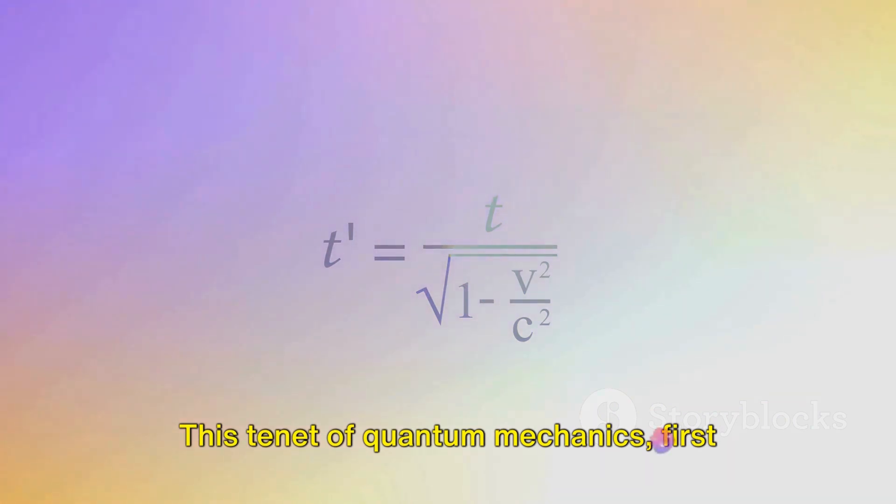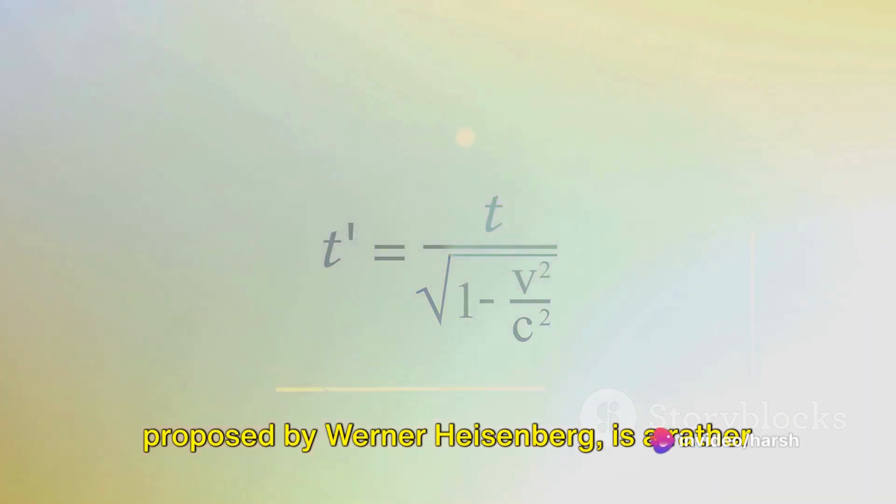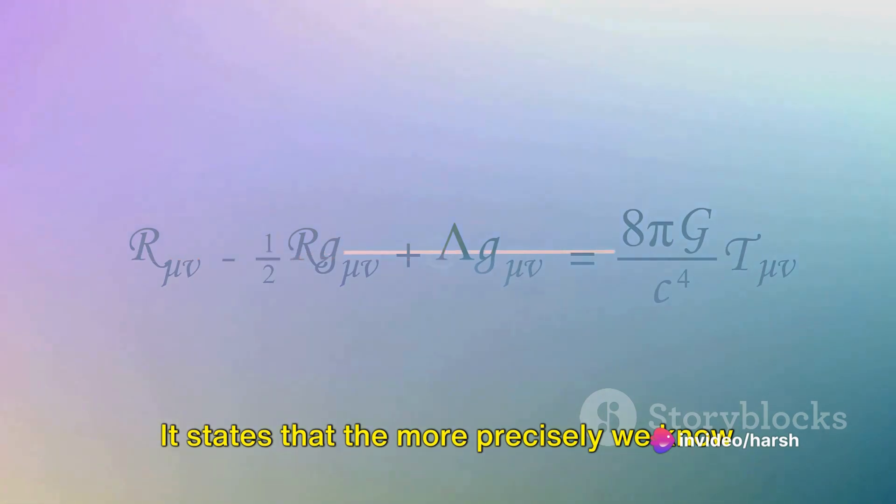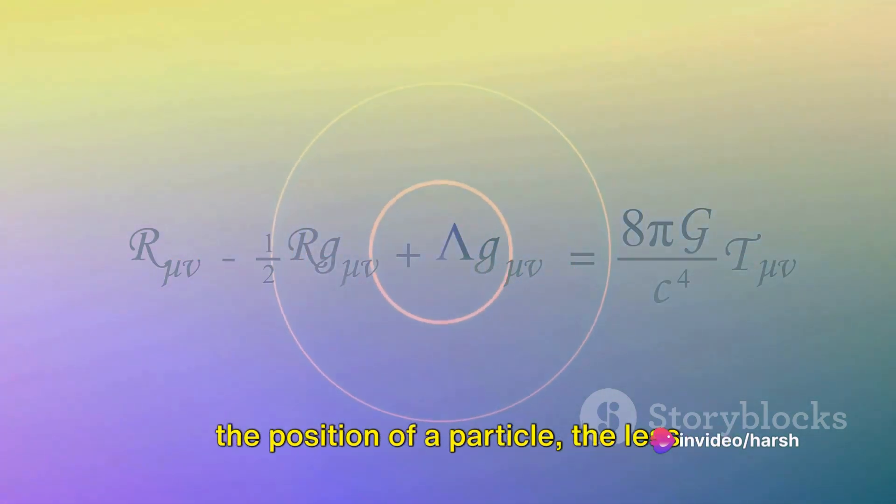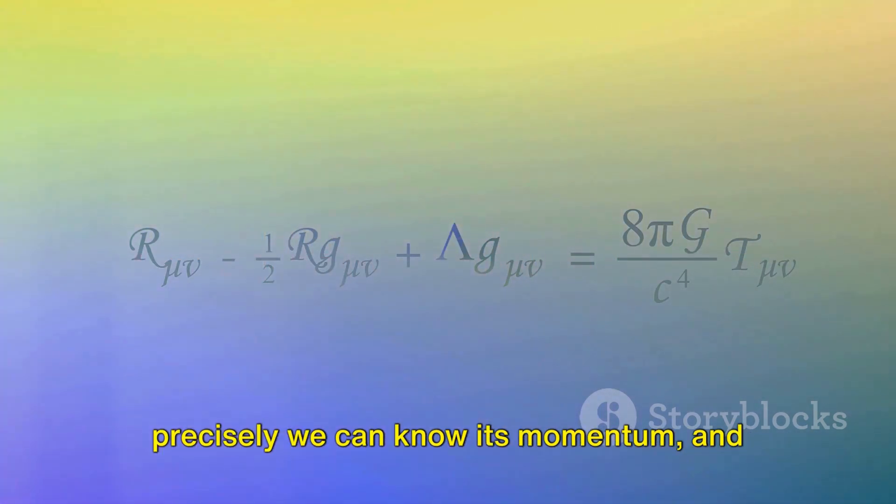This tenet of quantum mechanics first proposed by Werner Heisenberg is a rather curious one. It states that the more precisely we know the position of a particle, the less precisely we can know its momentum, and vice versa.